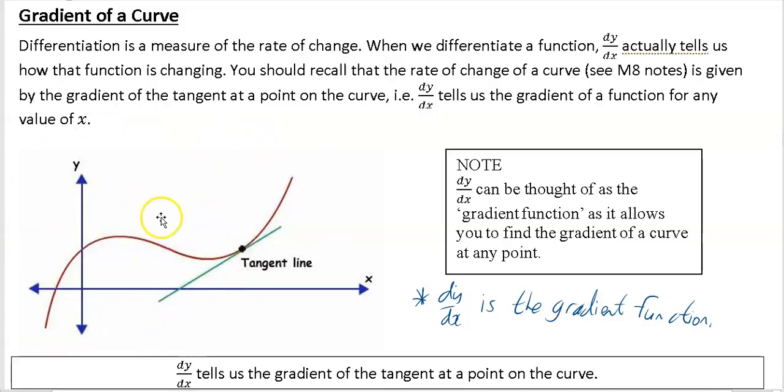So this to me looks like a cubic function. So the gradient changes. So for this particular cubic function, if you find dy by dx, that would give you the gradient. And as it says here, dy by dx tells us the gradient of the tangent at a point on the curve.